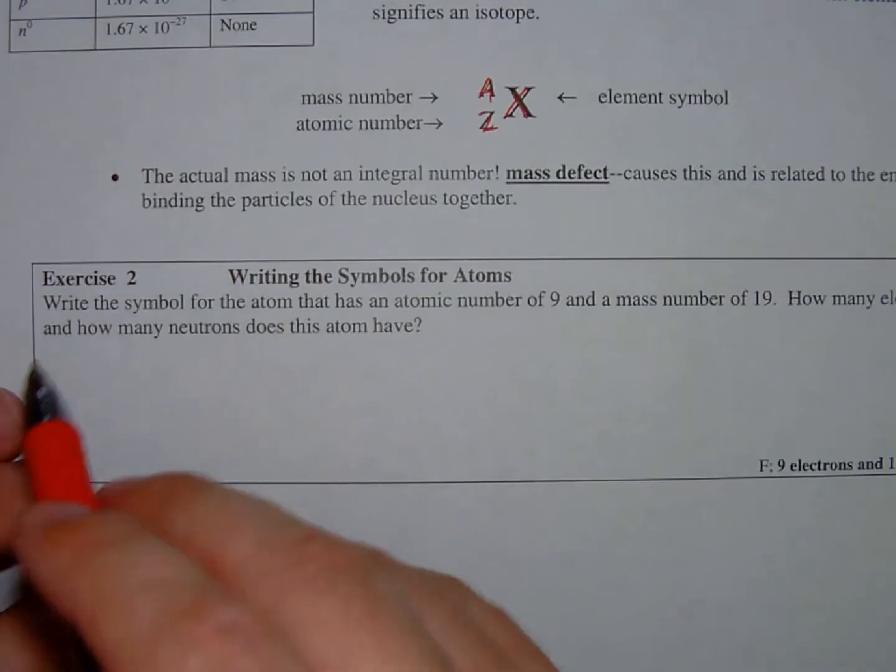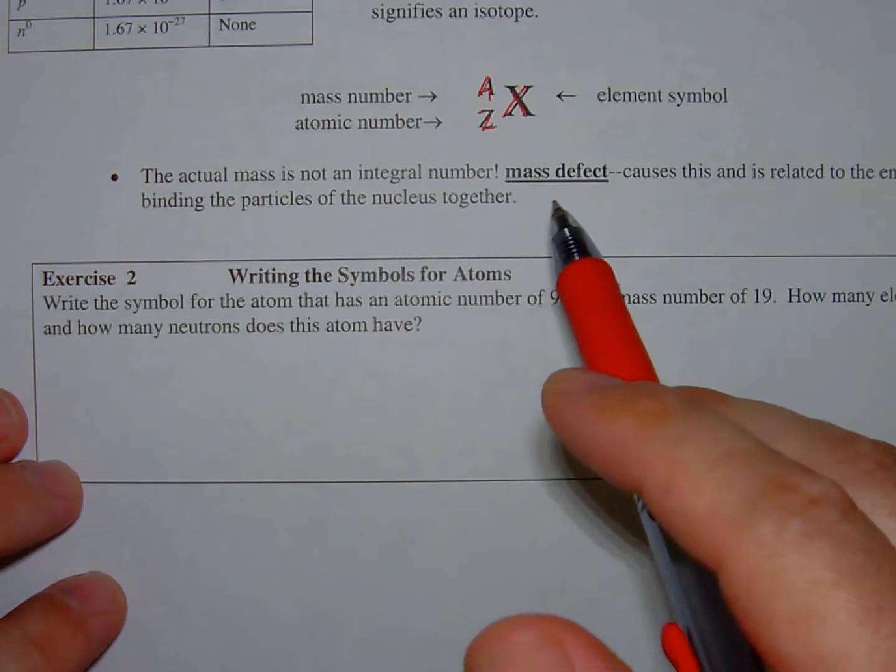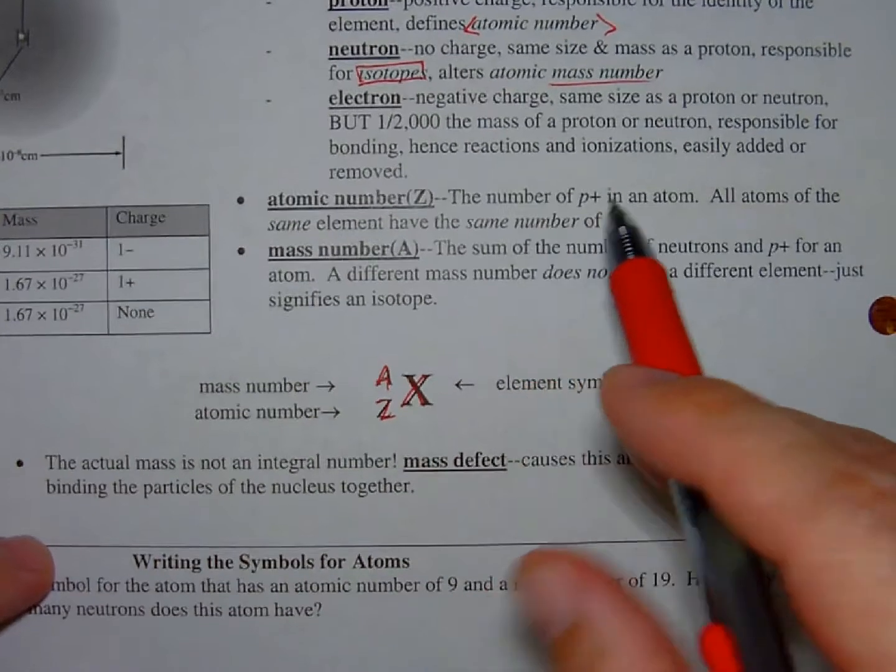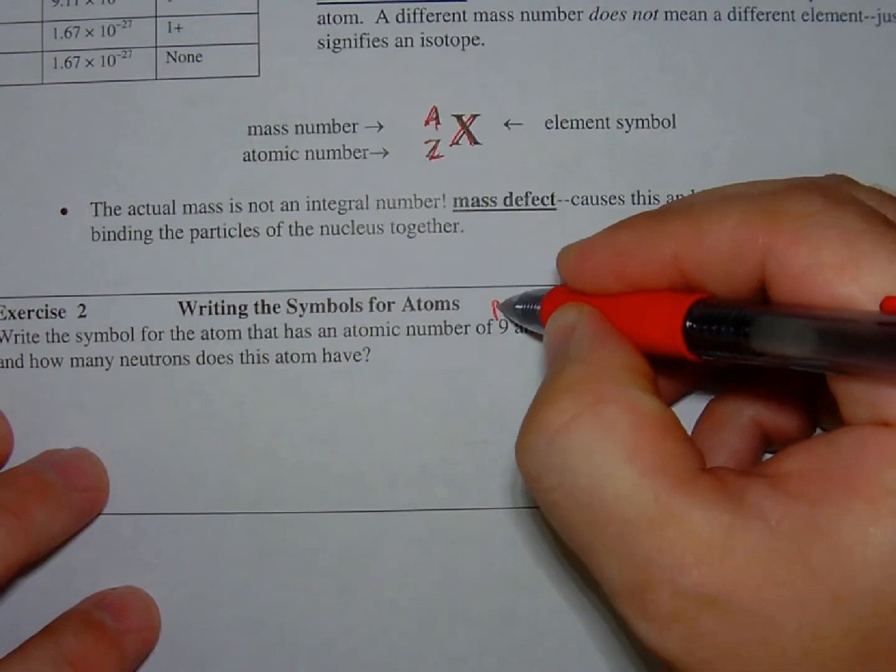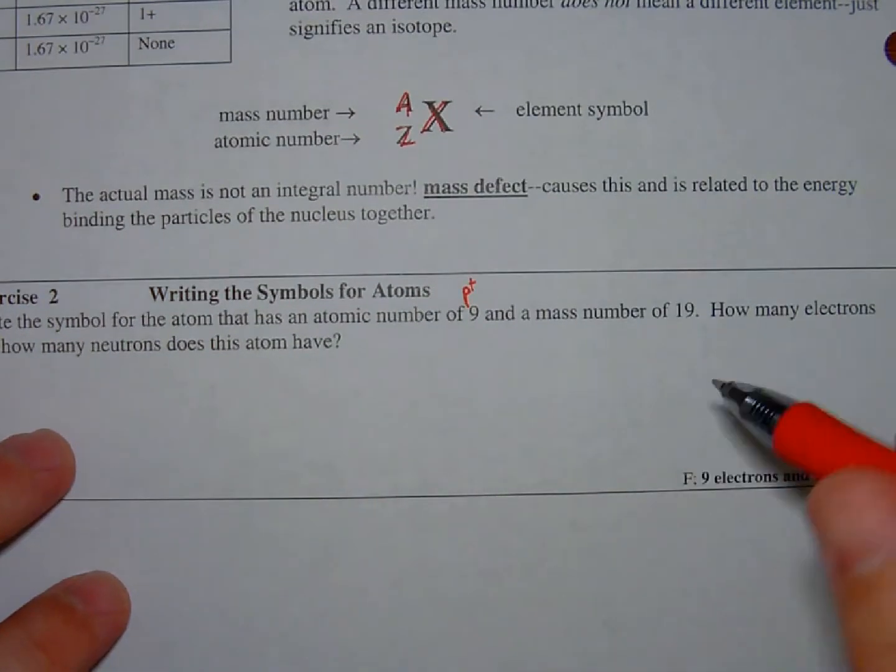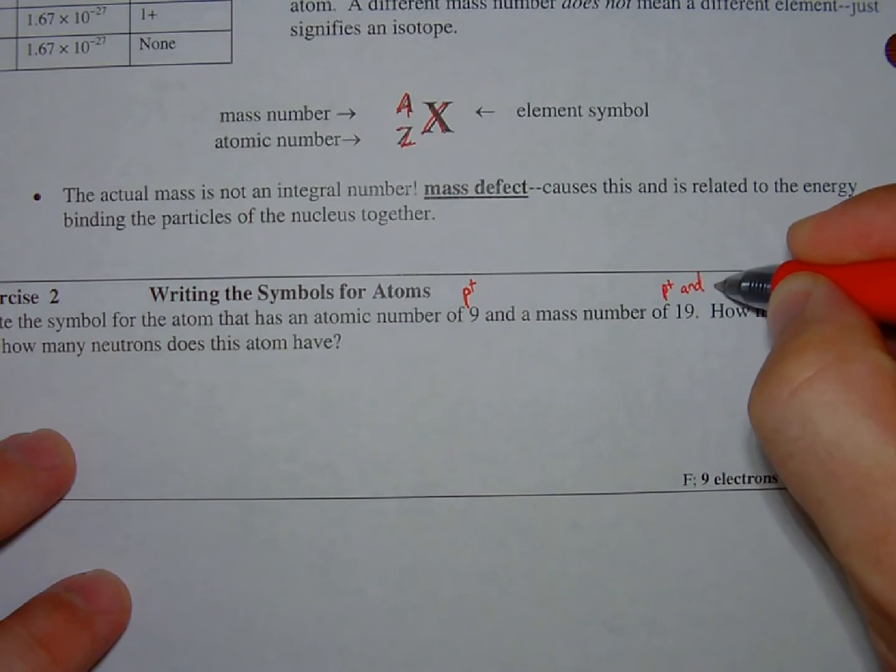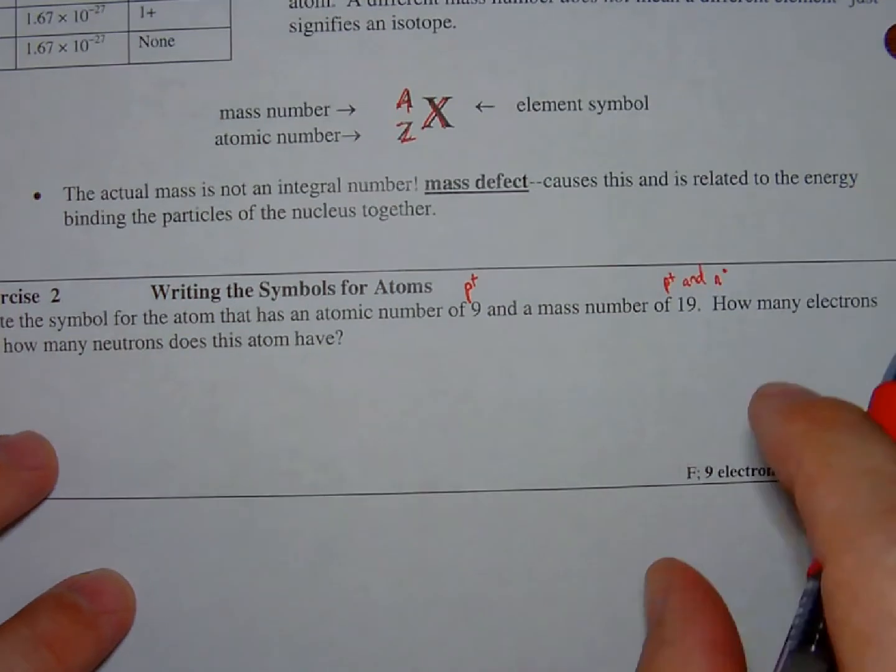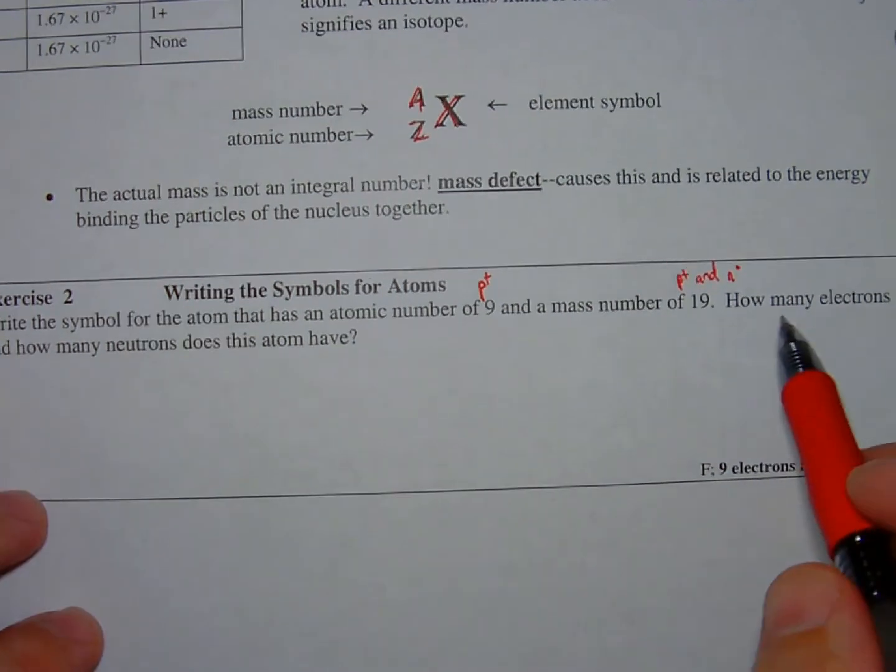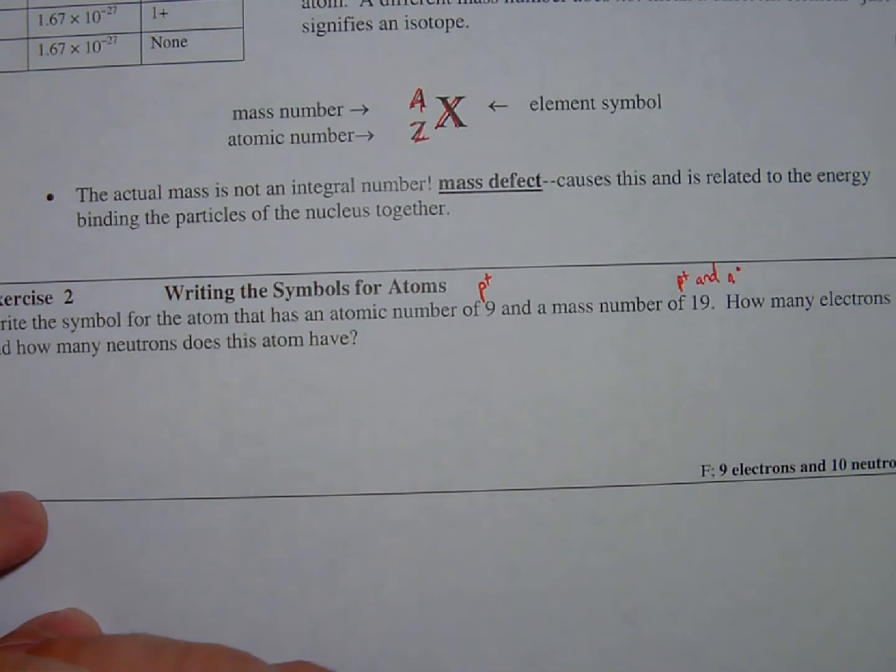So the exercise reads, write the symbol for the atom that has an atomic number. Remember, what is an atomic number? It's the number of protons. So this is the number of protons, and a mass number of 19. So this is the number of protons and neutrons. How many electrons and how many neutrons does this atom have?